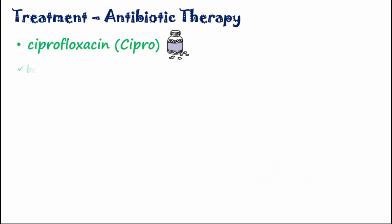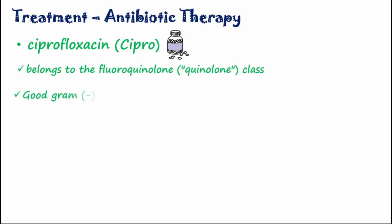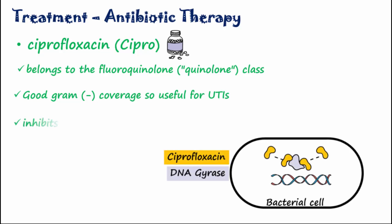Ciprofloxacin belongs to the quinolone class of antibiotics. It has good gram-negative coverage, so it's useful for UTIs. Its mechanism involves the inhibition of bacterial DNA gyrase, an enzyme necessary for bacterial replication.